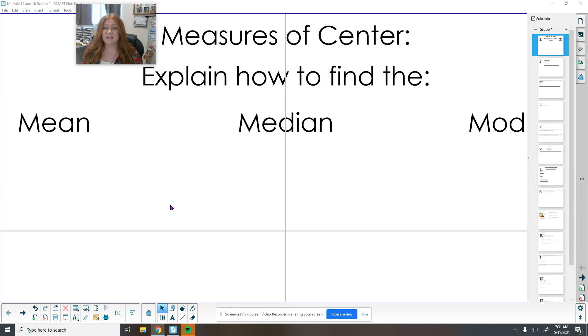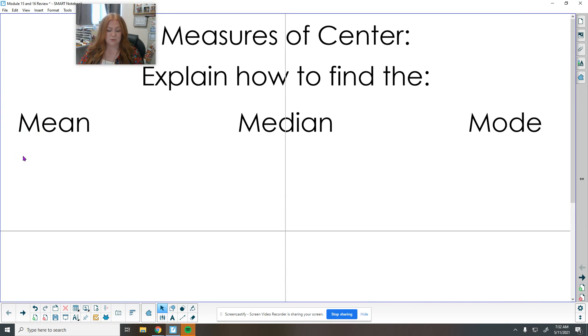We're going to start with measures of center. These are things that are going to tell us kind of the middle of our data. When we are finding the mean we want to take all of the numbers, add them up, and then divide by how many numbers we counted or added up or are part of the data set. That kind of fair shares or makes an average of everything. If we all pick different amounts of apples and then we all put them in a basket and divided them out equally, that is our average there.